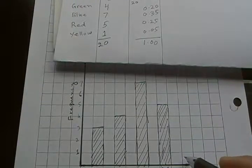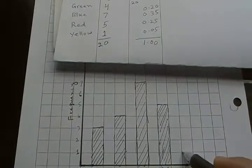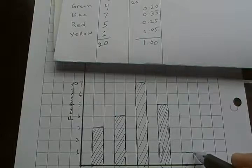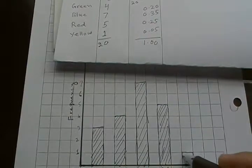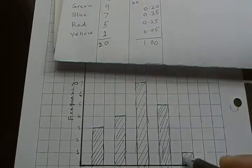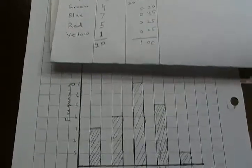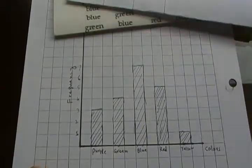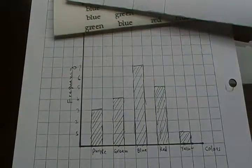And then yellow - yellow has frequency 1 so its height would be 1. This would be called a bar graph for this given data.